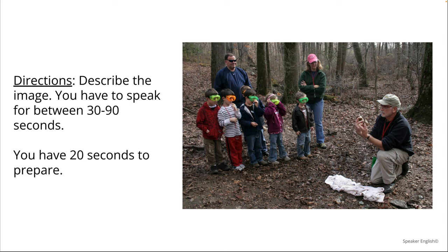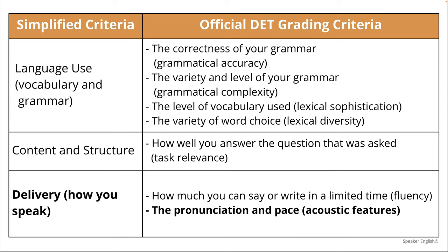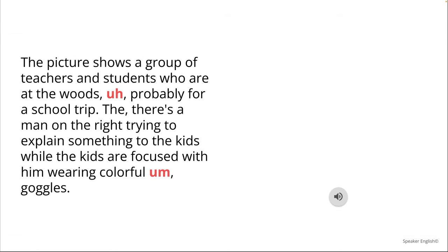We're going to look at this speak about the photo question. She's going to talk about this photo. When we're talking about the Duolingo English test, there are six or seven grading criteria. We're going to focus on her pronunciation and pace — the delivery section at the bottom. What's wrong with her pronunciation and pace? I want you to think about that while you're listening.